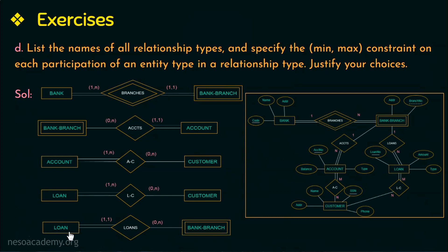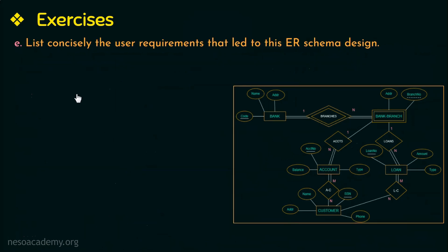The last relationship type 'loans' connects loan and bank branch. Loans availed belong to one bank branch, so total participation; one loan can belong to at most one branch. A bank branch need not necessarily have loans — only some branches may — so partial participation represented as 0, and one branch can have at most n loans, giving (0,n).